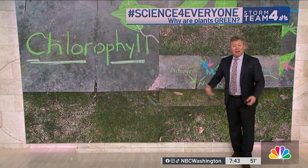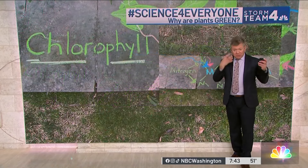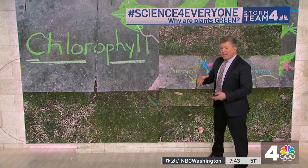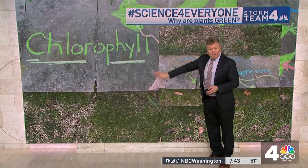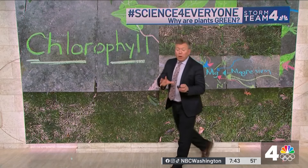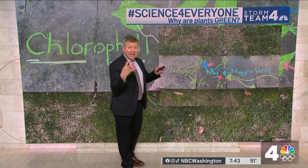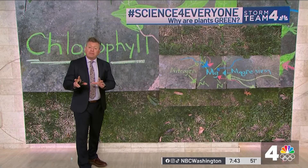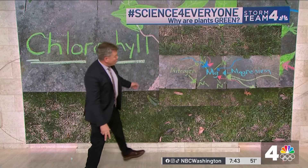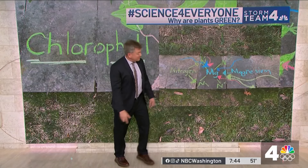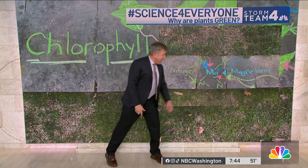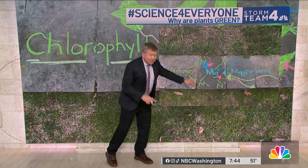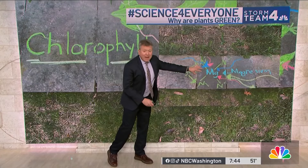The green light does not help them grow — it's just what we see, what we perceive with our eye. And the reason for this is chlorophyll. Chlorophyll is a chemical made up of many different types of elements. One of those elements is magnesium, that's in the middle, and then nitrogen, as another element, surrounds the magnesium.